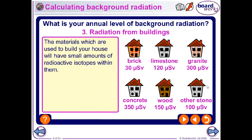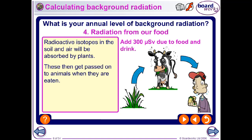Radiation from buildings depends on the building material: brick, limestone, granite, concrete, and wood all have different levels of radioactive isotopes. The highest levels come from concrete, which is predominantly used in Spain. From food and water we eat and drink, we get about 300 micro sieverts per year.